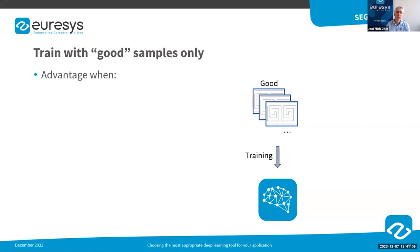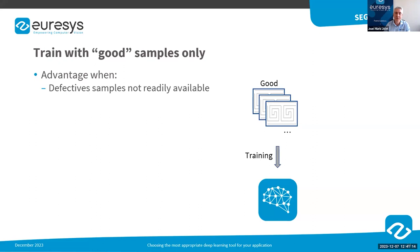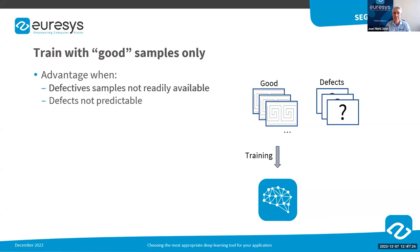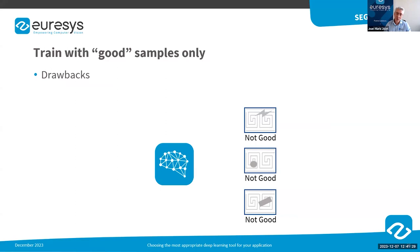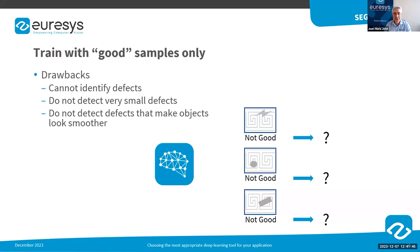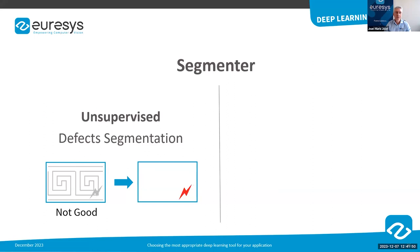The fact that we can train the neural network with images featuring good samples only is a great advantage for applications where defective samples are not readily available. An unsupervised segmenter is also the perfect tool when defects are not predictable — for instance, in case of new defects that might appear due to the aging of a machine. The drawback is that it cannot identify the type of defect because it has never learned them. It might also not be able to detect very small defects or defects that make the object look smoother.